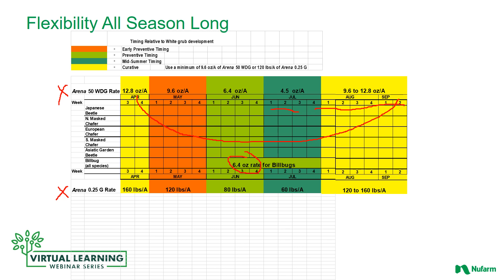A lot of that rate variation has to do with the size of the instar grubs and the amount of feeding and activity that goes on. When making curative applications you need the higher rate. In the early application in May you need that residual to take you all the way through the season. As you can see, Arena can be applied about any time through the year with very little failure in controlling grubs.